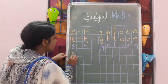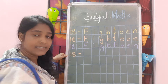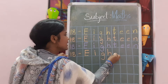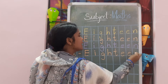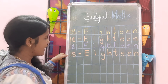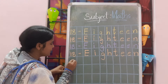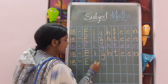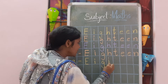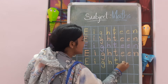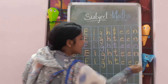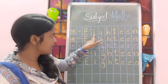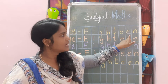One more time. 18 — keep a dash in the middle. E, I, G, H, T, E, E, N. 18. Finish writing. Write in the next box again. 18 spelling — first write the number 18. Keep a dash in the middle. E, I, G, H, T, E, E, N. 18. Finish writing. Repeat again: 18 — keep a dash in the middle. E, I, G, H, T, E, E, N. 18.